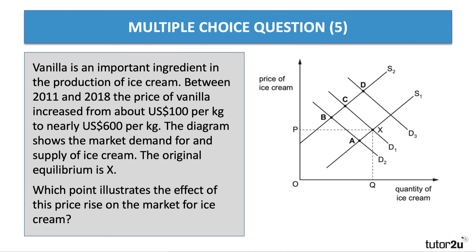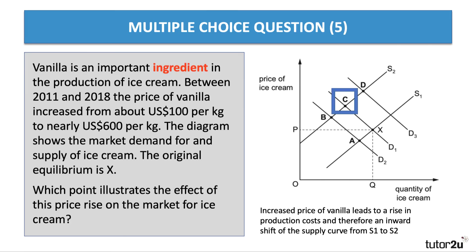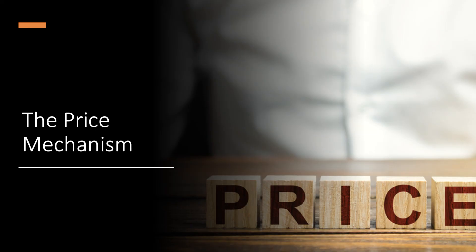The increase in the price of vanilla is an increase in the cost of supply, therefore the supply curve will shift to the left from S1 to S2. We can eliminate answer A. Will it cause a shift in the demand for ice cream? No — it'll cause a higher price for ice cream, but it's not a factor affecting the actual demand curve for ice cream itself. Therefore demand would contract from X to point C. An increased price of vanilla leads to an inward shift of the supply curve from S1 to S2 and a movement up the demand curve.